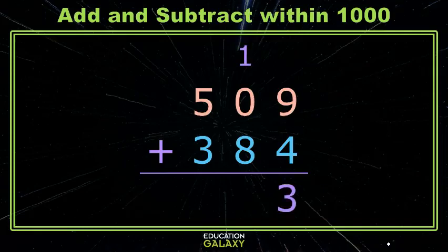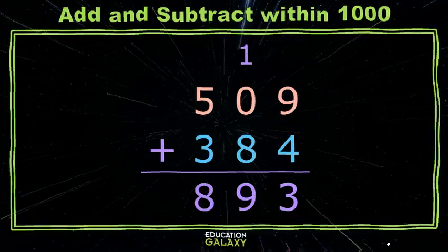Now we have 1 tens and 8 tens for a total of 9 tens. And lastly, 5 hundreds and 3 hundreds for a total of 8 hundreds. And that's adding. Moving on.